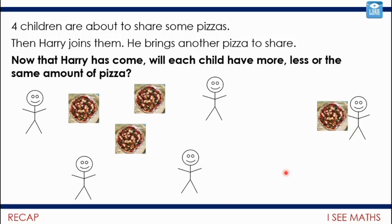What if the four children had only three pizzas? They'd each get three quarters — less than one each. When Harry arrives and adds his pizza, it's four pizzas between five children. They'd still have less than one each, but a little bit more. Each of the four pizzas can be split into five parts, giving four fifths each — just a fifth away from a whole pizza rather than a quarter away. So the answer depends on how many pizzas they started with: four, more than four, or less than four.